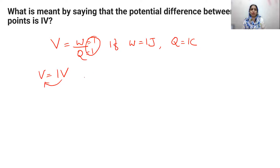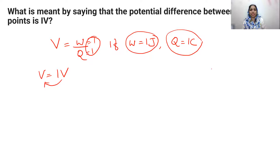One volt can be defined as the potential difference if one joule of work is required to move one coulomb of charge from one point to another point. The potential difference between the two points is one volt.